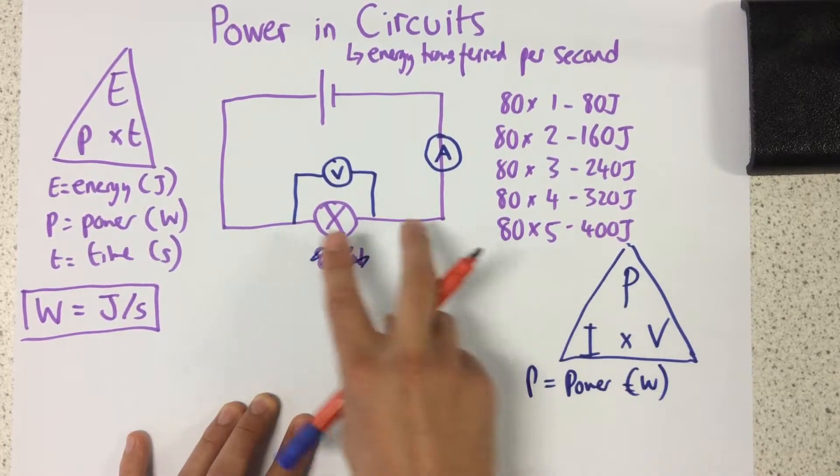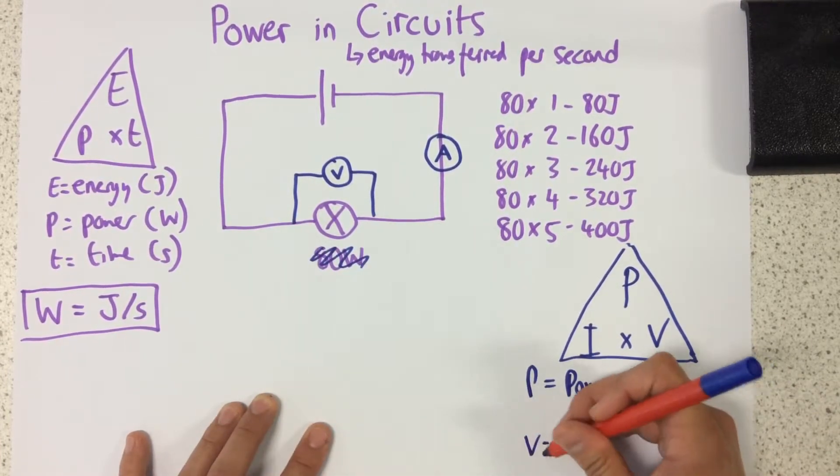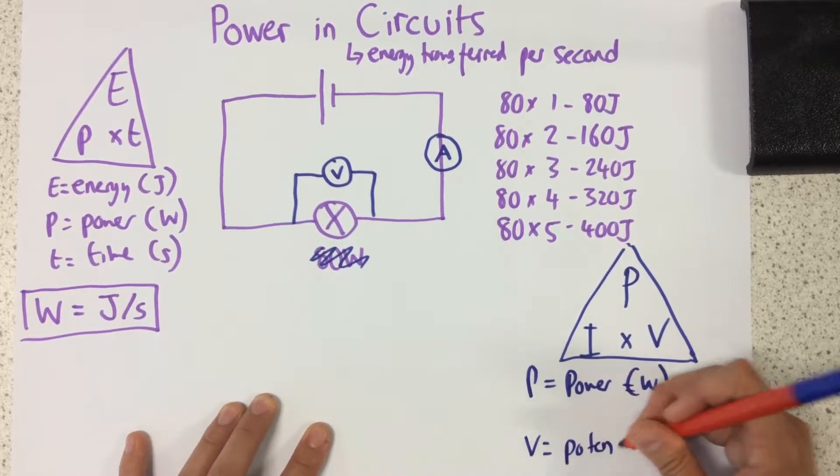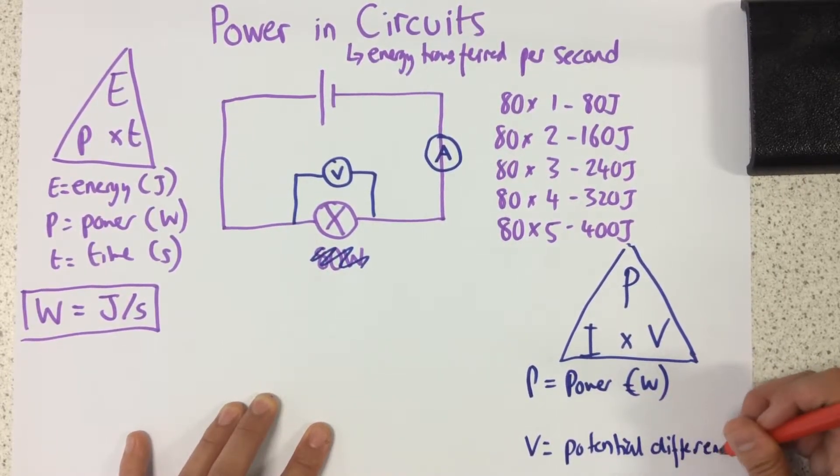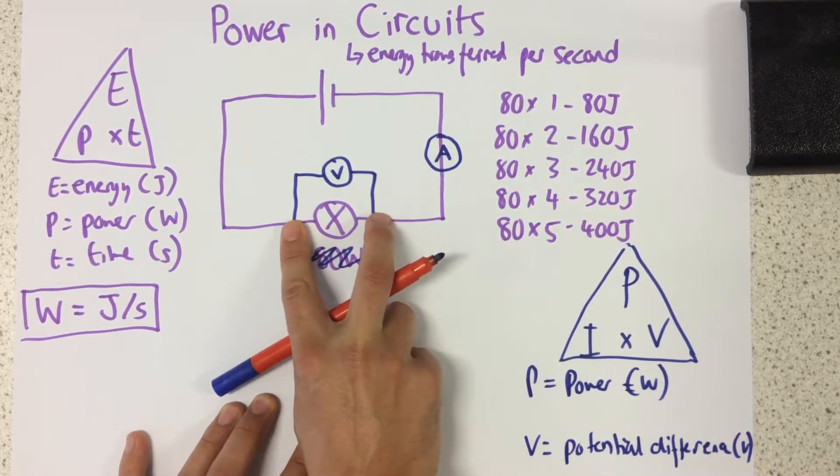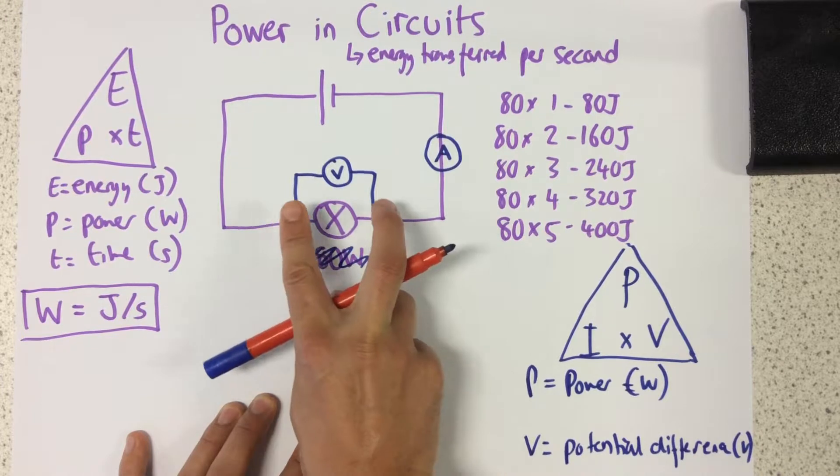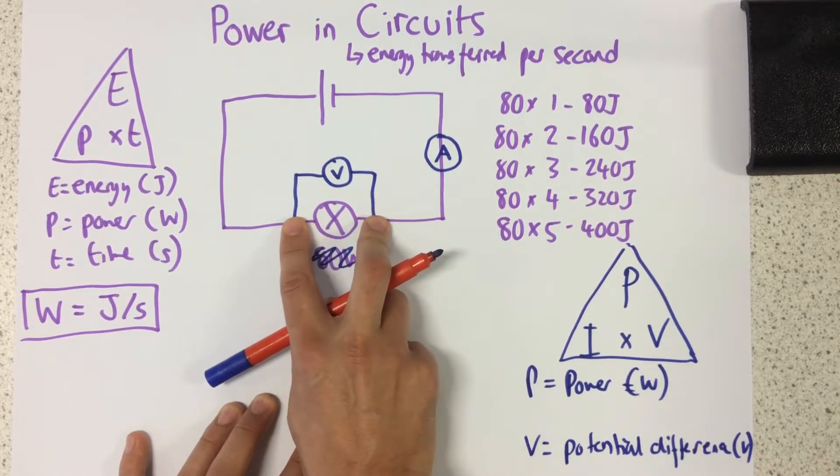Now my potential difference is how much energy is being transferred between two different points. It's the difference in energy between two different points. So if I've got more energy being transferred across a component, I'm going to have more energy transferred per second.